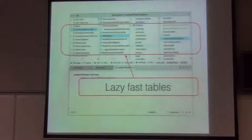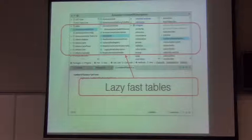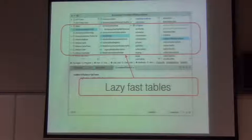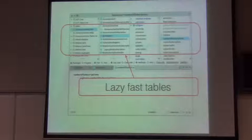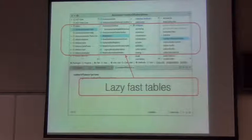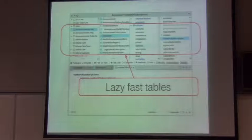First, every table in the new browser uses a new fast table component in Faro, which provides a very fast view on large lists. It does this because it builds UI elements only for the visible part of the list.